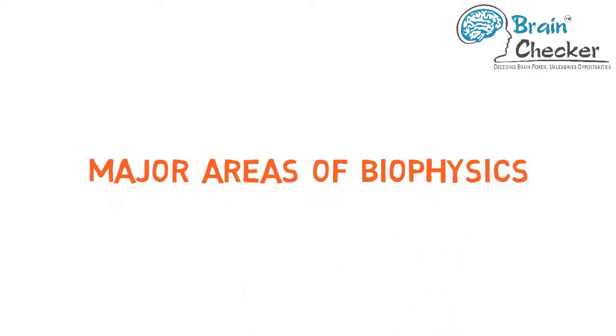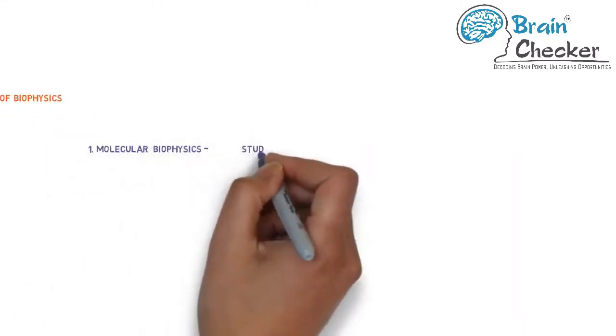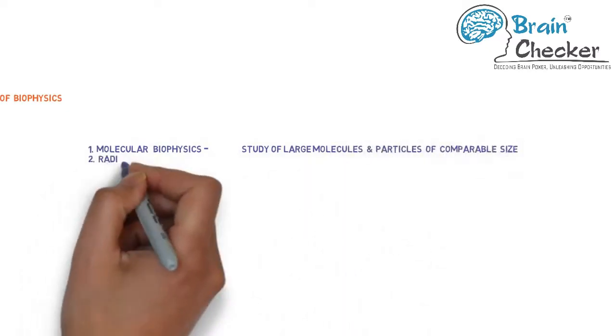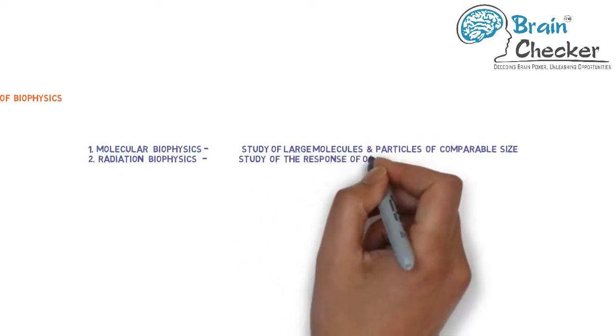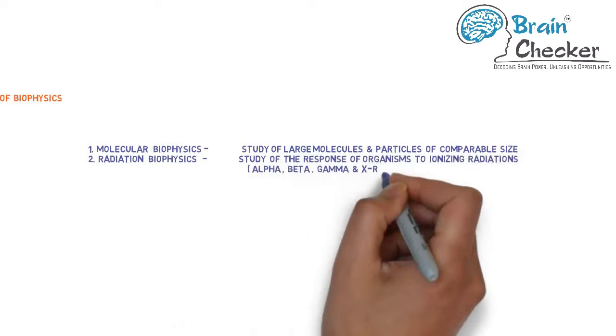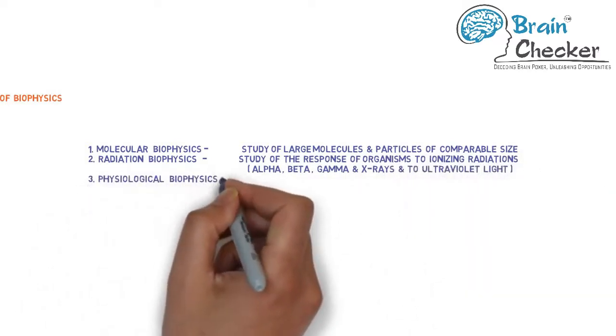The major areas of biophysics are the following. Molecular biophysics is the study of large molecules and particles of comparable size which play important roles in biology. Radiation biophysics consists of the study of the response of organisms to ionizing radiations, such as alpha, beta, gamma and x-rays and ultraviolet light.